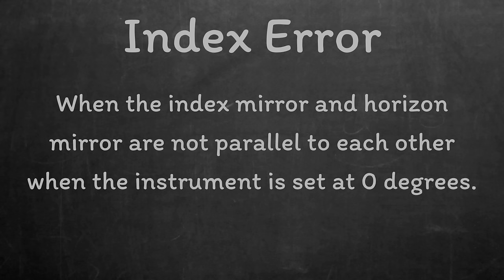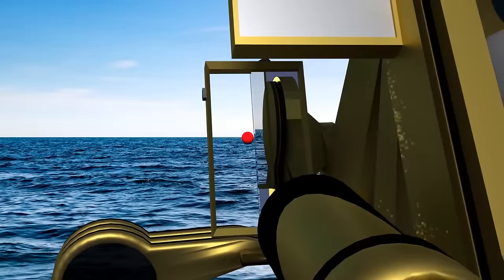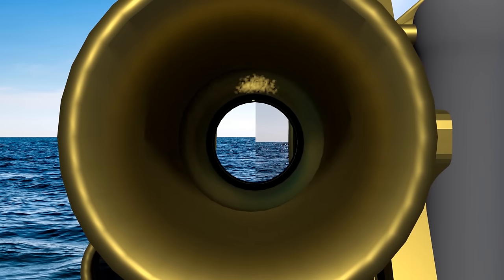Index error is when the index mirror and the horizon mirror are not parallel to each other when the instrument is set at zero. If you set the instrument to zero and look through the telescope at the horizon, you can spot any index error. If there's a step in the horizon, index error is present.